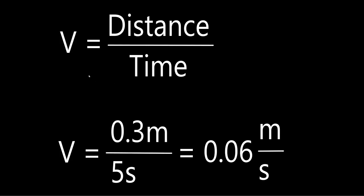In our case, velocity is calculated by dividing the distance the object has traveled by its time. The cylinder was 30 centimeters tall or 0.3 meters and the ball took 5 seconds to drop. Which leaves us with an average velocity of 0.06 meters per second.